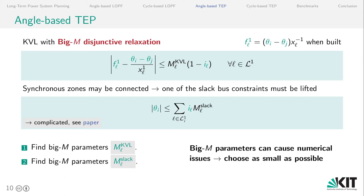And actually these big M parameters are very important because they can cause numerical issues. And we want to choose them as small as possible, but as big as necessary to be inactive whenever we don't invest in the line. So what we have to do in this formulation are two steps. We have to find the big M parameters for the Kirchhoff voltage law and for the slack parameters.